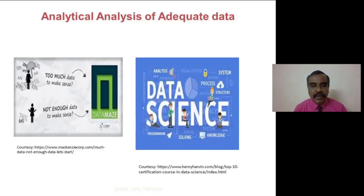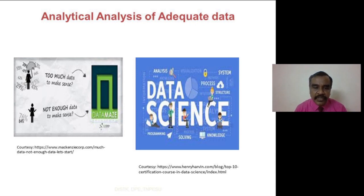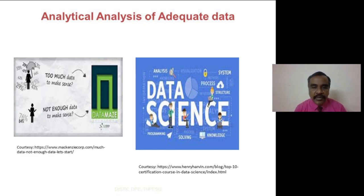Analytical analysis of adequate data. Data is nothing but information. The information received towards your research must be adequate and sufficient enough to carry out analysis using data science, including statistics. To do statistics and get results by analyzing the data, a sufficient and adequate number of data points is required.